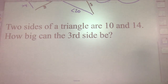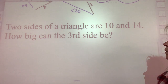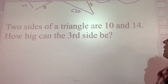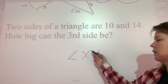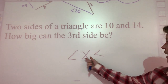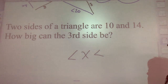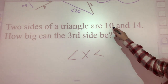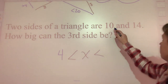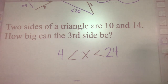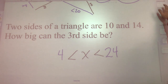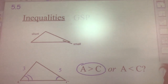Now you try one: sides of 10 and 14. Set it up the same way — the third side has to be greater than the difference but less than the sum. 14 minus 10 is 4, and 14 plus 10 is 24. So the answer is: 4 < s < 24. That's what you're doing in section 5.5, inequalities in triangles.